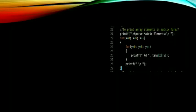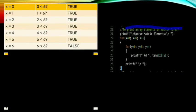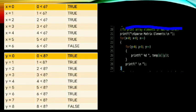We will now proceed to explain how our code prints array elements in matrix form. This code also uses two loops. The first decision is x equals zero — is zero less than six? True. It proceeds to the second loop where y equals zero — is zero less than eight? True.